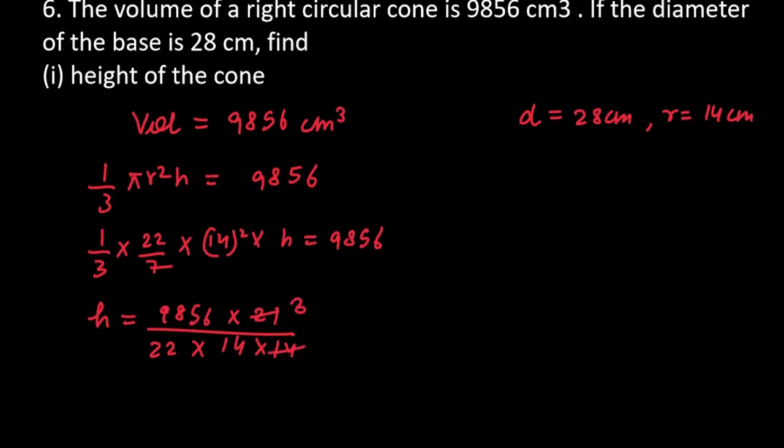This is 3, this is 2. And yes, you can reduce from 2 to 9,856. So, this gives you value of h. You can see 22 can cancel, reduce these values and you will get the final answer of 48 centimeter as the height.